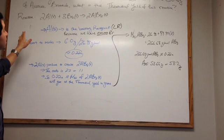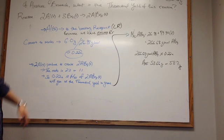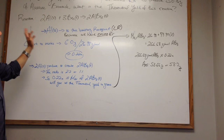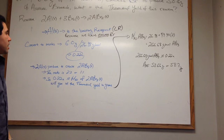Right off the bat, we can tell that aluminum is the limiting reagent because we have excess bromide. So knowing that, we have to convert the weight of aluminum, 6.0 grams, into its molecular weight of 26.98 grams per mole, and we get a result of 0.22 moles.